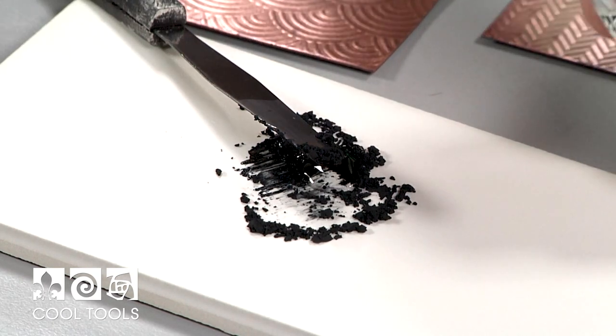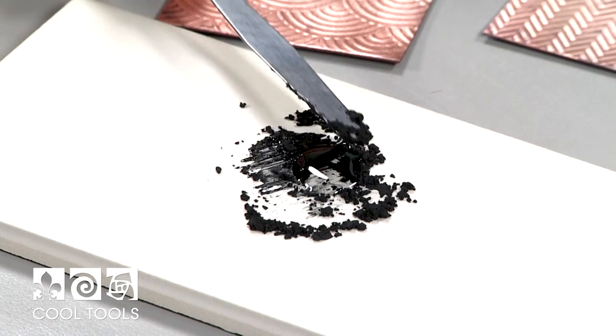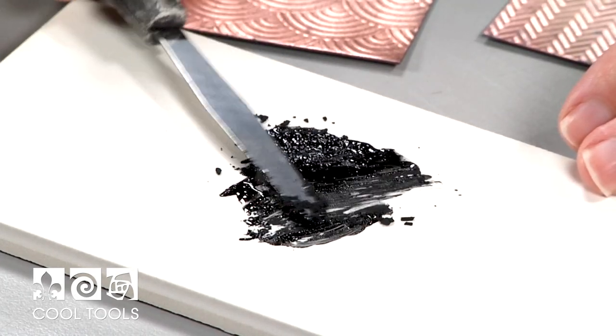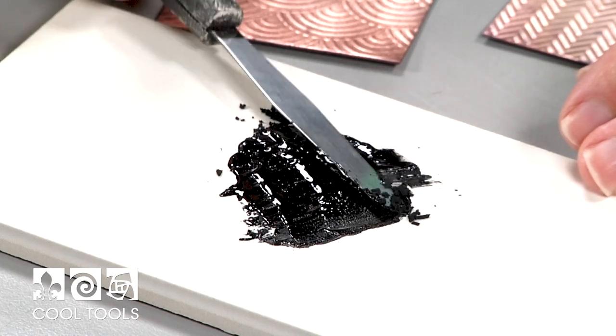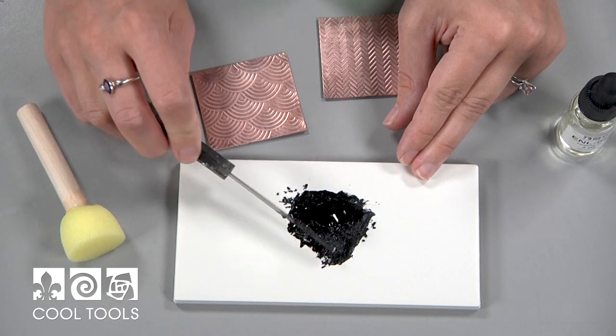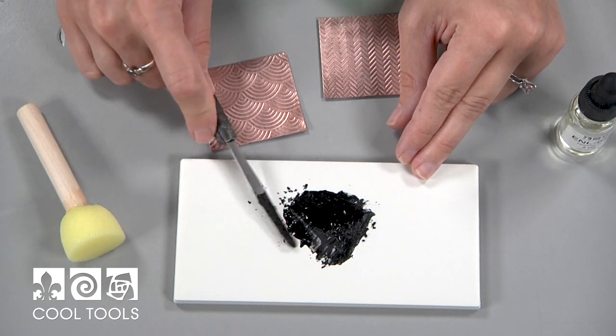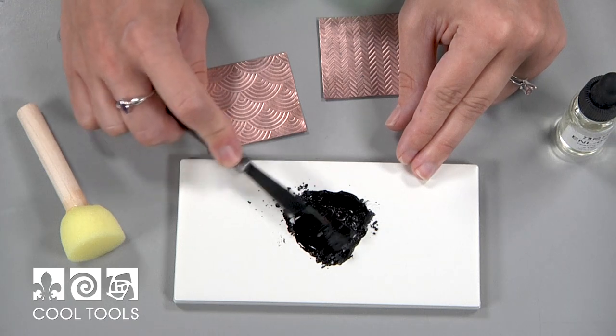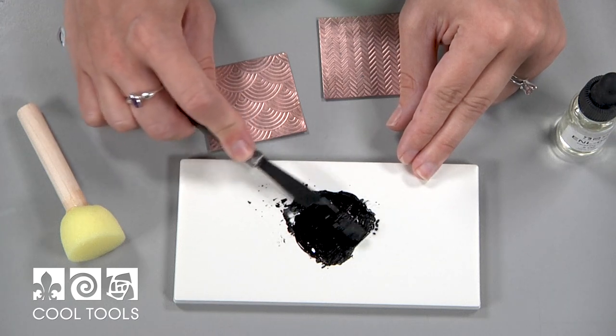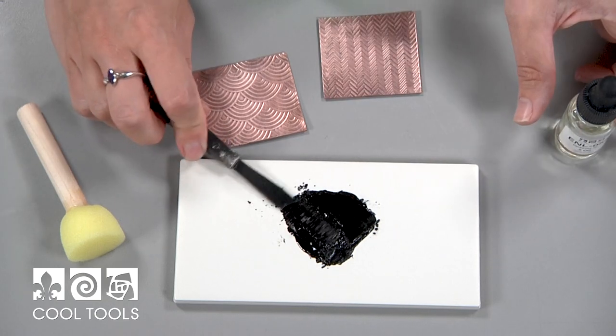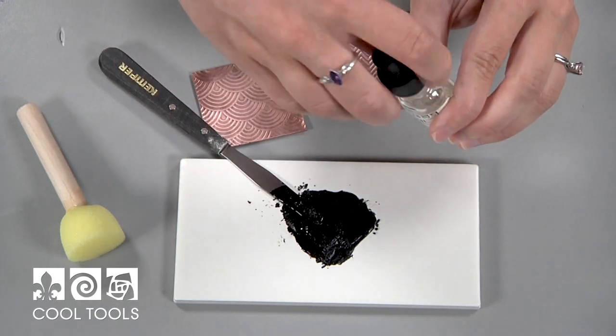And you want it to be opaque, so you don't want to use so much squeegee oil that it's kind of transparent. So I'm just using the palette knife to go back and forth and evenly integrate the powder with the oil. It's still looking a little thick to me, so I'm going to add just one more drop. I need to mix it some more.